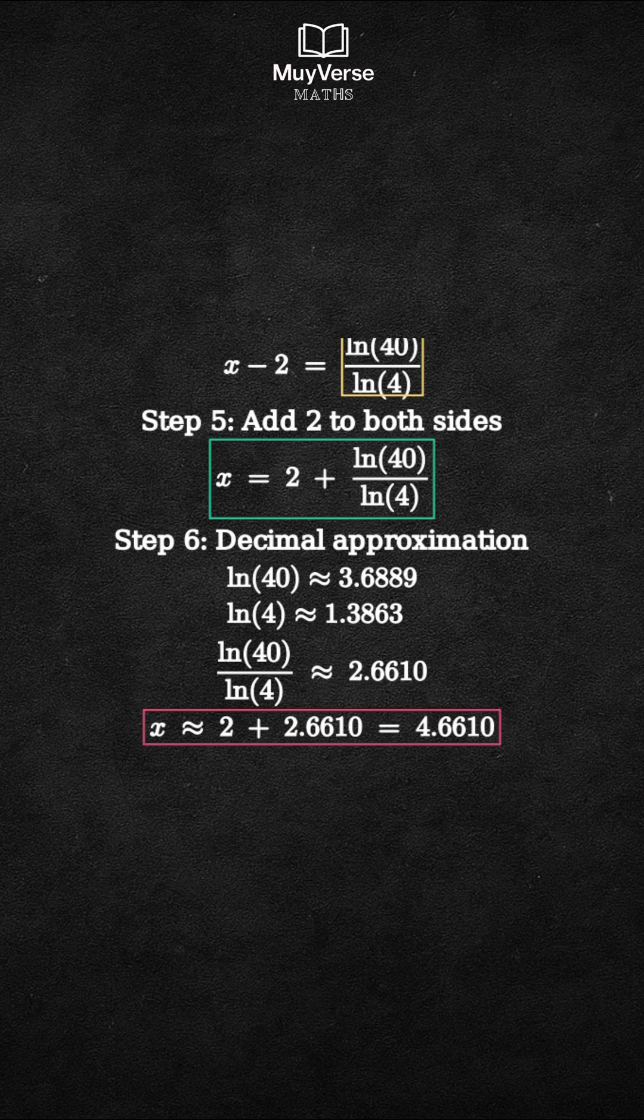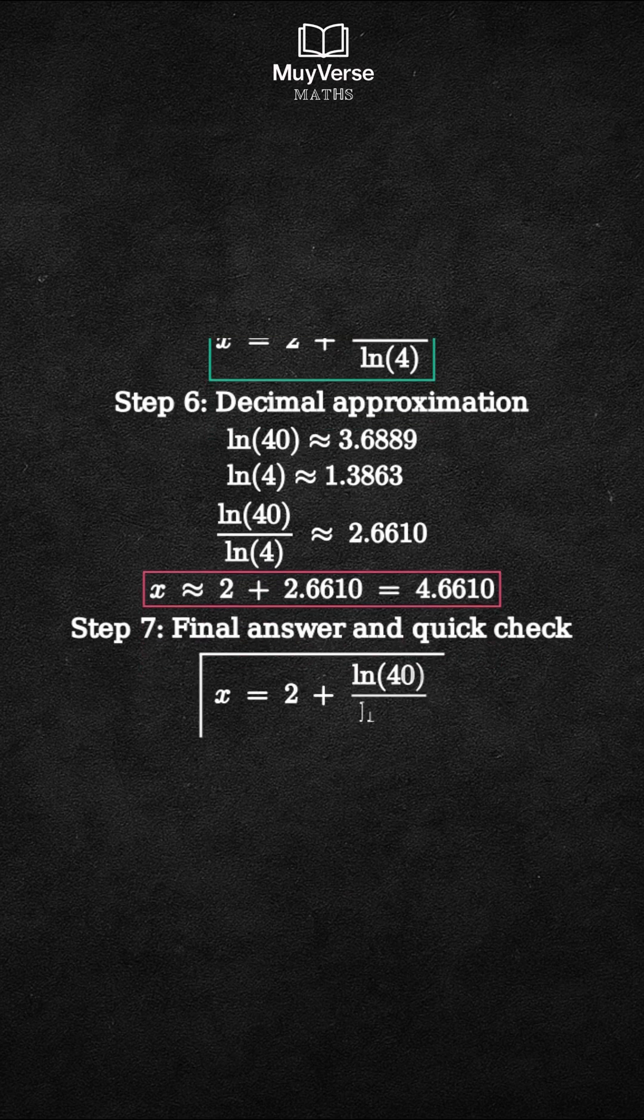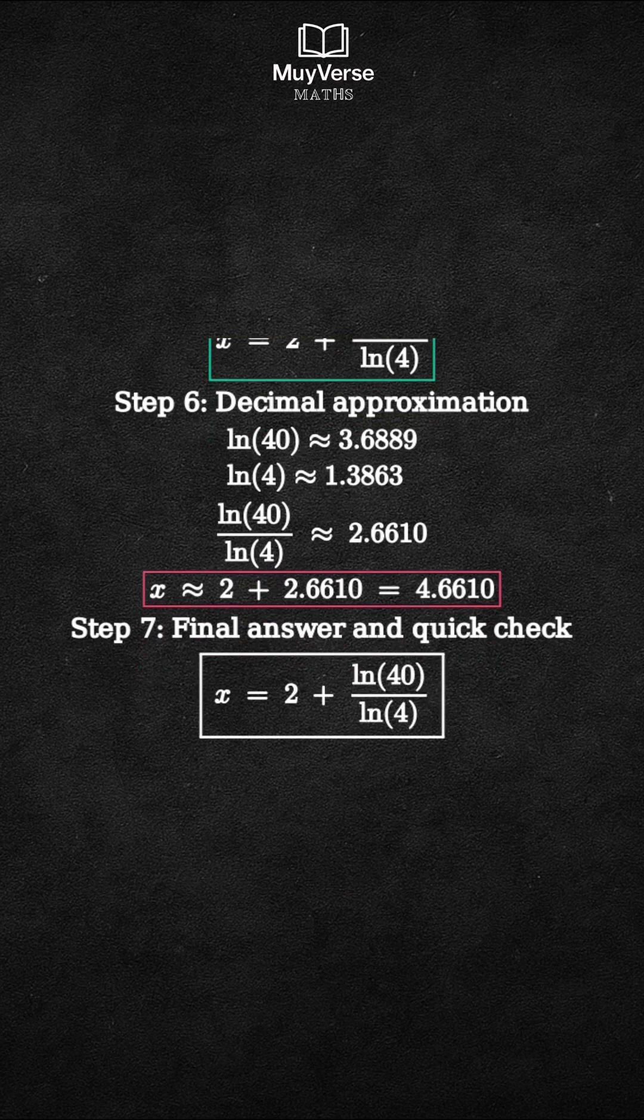Step 7: State the exact and approximate answers, and perform a quick consistency check. Exact form x equals 2 plus natural log of 40 over natural log of 4. Approximate value x is about 4.6610.